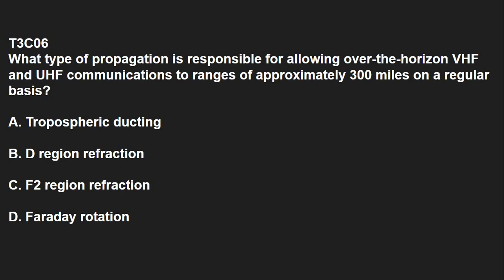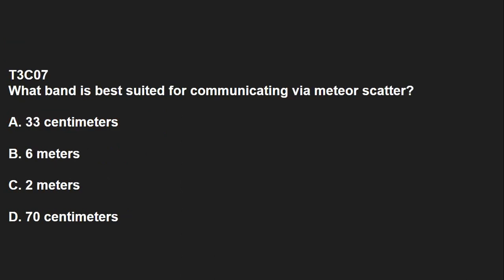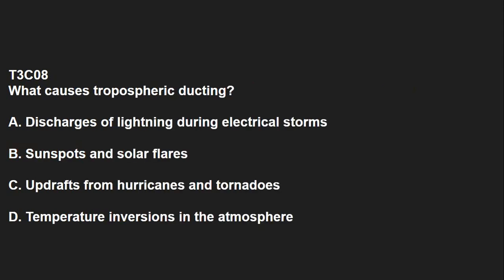T3C06: What type of propagation is responsible for allowing over-the-horizon VHF and UHF communications to ranges of approximately 300 miles on a regular basis? Tropospheric ducting. T3C07: What band is best suited for communicating via meteor scatter? That answer is 6 meters. T3C08: What causes tropospheric ducting? That is temperature inversions in the atmosphere.